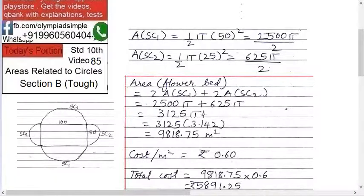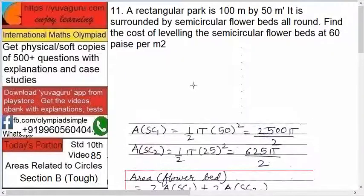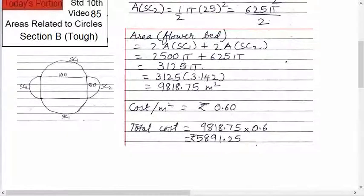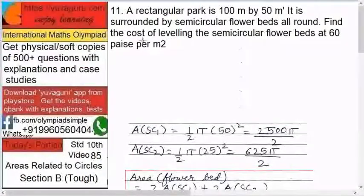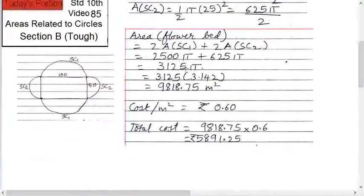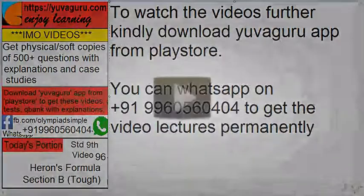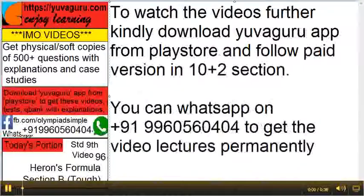3125 π. Now you want the cost. We'll have to find the value in terms of numbers because we're calculating in terms of rupees and paise. So multiply this by 3.142 and then you'll get it.